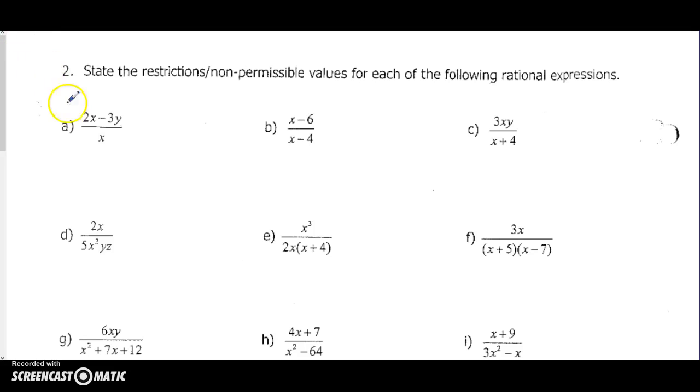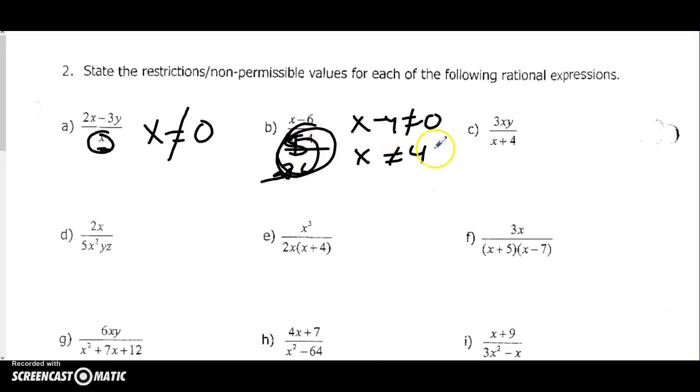That's about restrictions. When we get to page two, what we're talking about with restrictions is we want to make sure this makes sense. Whatever happens on top, we can't have X equal to zero. For each of these, we're looking for the denominator—the bottom part of the fraction—not to be zero. So if I want X minus 4 not to be zero, that means X cannot be 4.